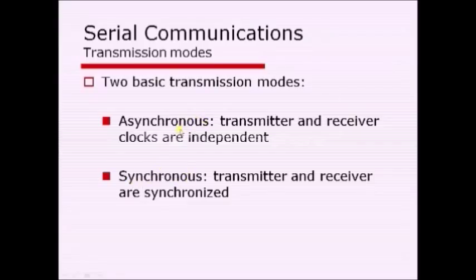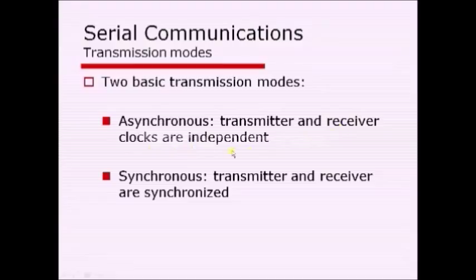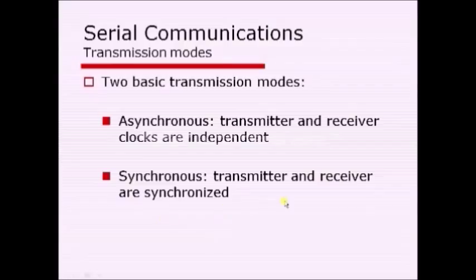In asynchronous transmission, both the transmitter and receiver are connected to different clock sources, but the clock value should be the same, because synchronization is done only with those clocks. In synchronous transmission, the transmitter and receiver are synchronized with the same clock — one device generates the clock and the other device receives it. The device generating the clock is called the master and the device receiving it is called the slave.